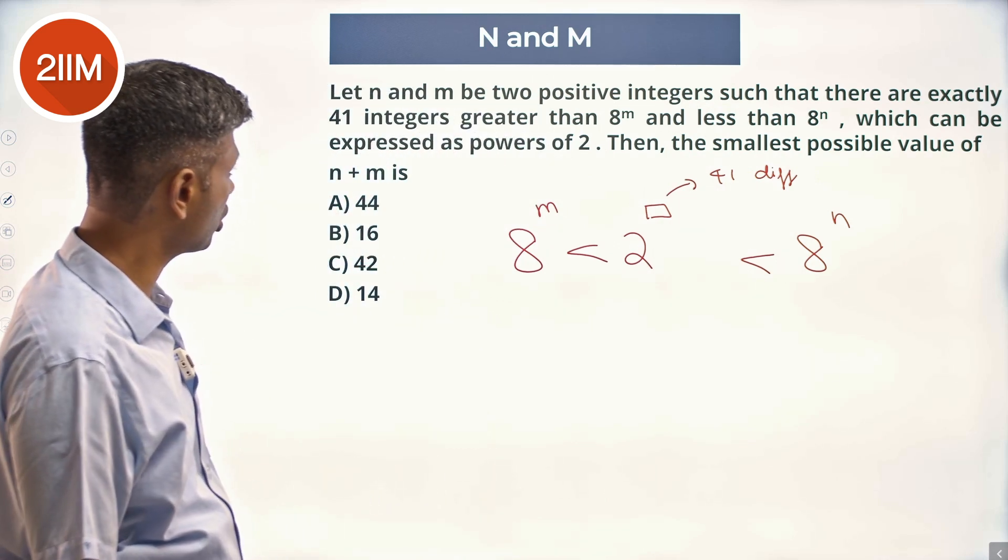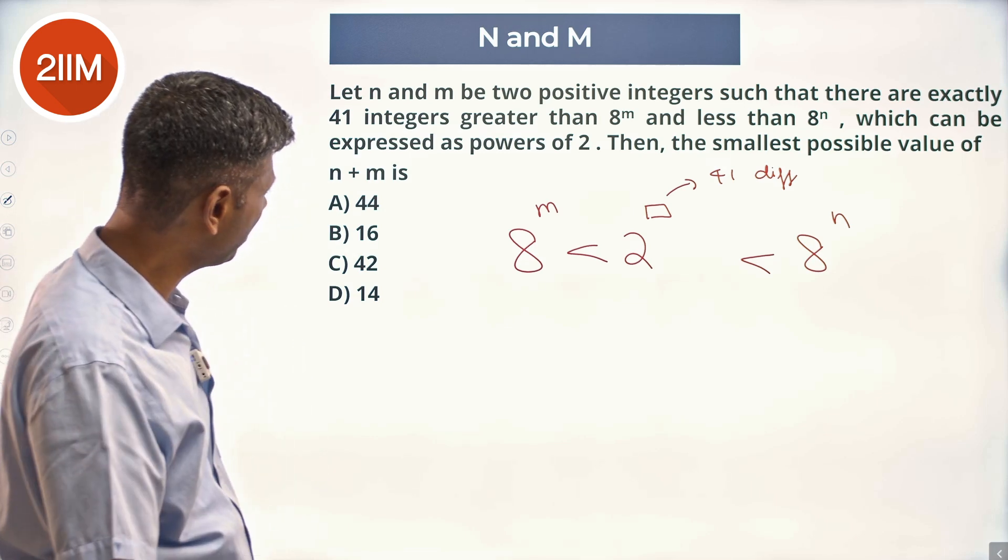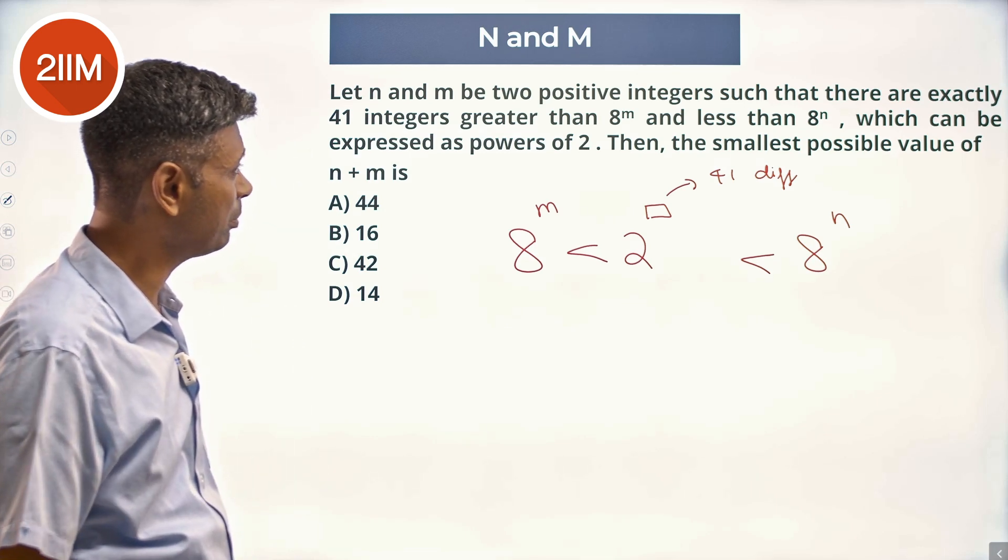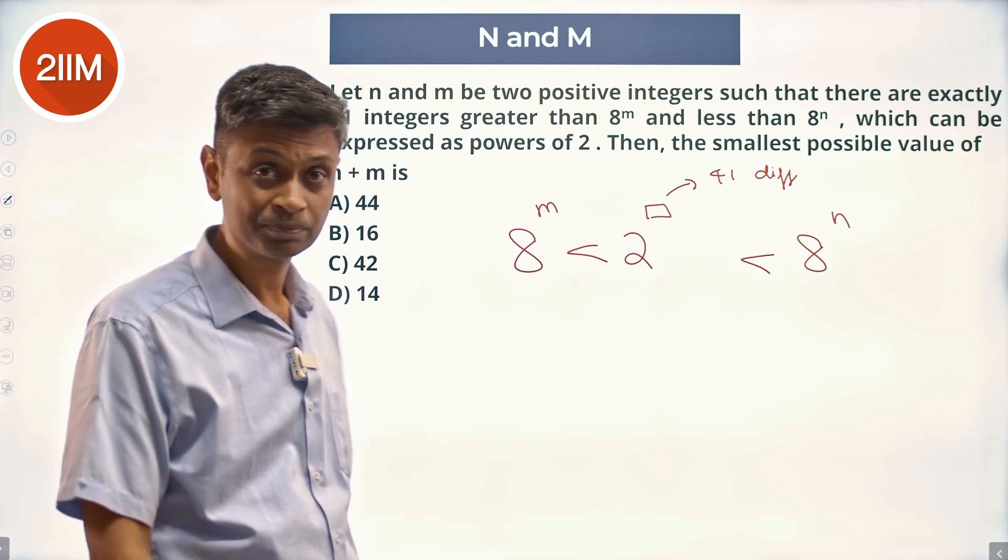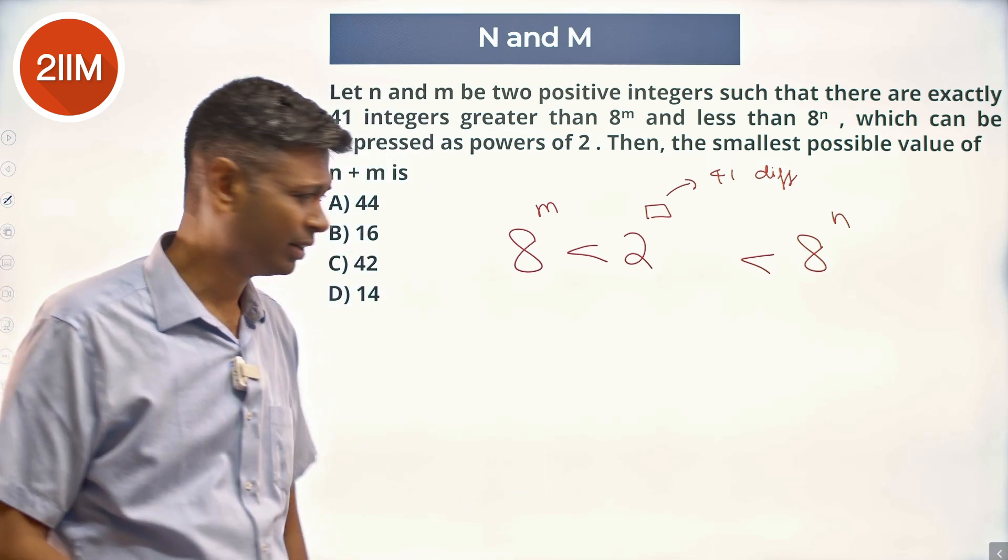Then the smallest possible value of n plus m is... So 8 power m and 8 power n - in between these two a bunch of powers of 2 are sitting there. First of all,